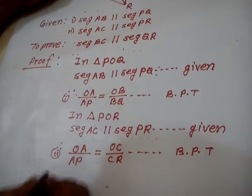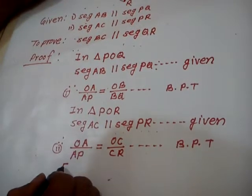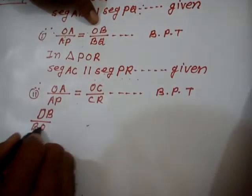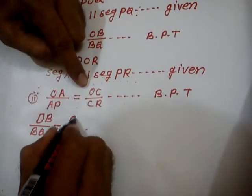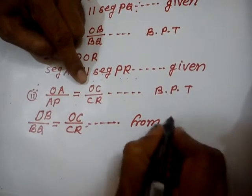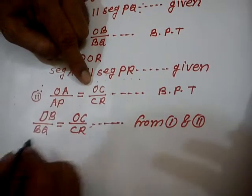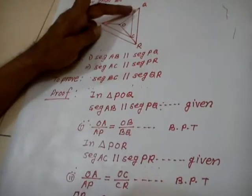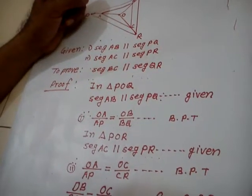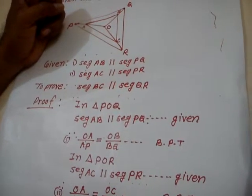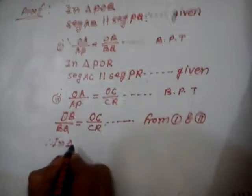From 1 and 2, what we can write? OB upon BQ is equal to OC upon CR. See in the figure. These two are the converse of BPT. We can write. This is third.